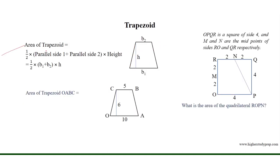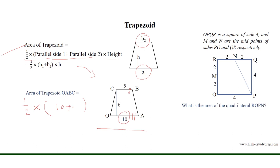The area of a trapezoid is equal to half multiplied by the sum of the lengths of the parallel sides — that is, the sum of the lengths of the bases — multiplied by the height. Applying this formula for trapezoid OABC: area equals half multiplied by the sum of the parallel sides, which is 10 plus 5, multiplied by the height, which is 6. So the area equals half times 15 times 6, which results in 45 square units.